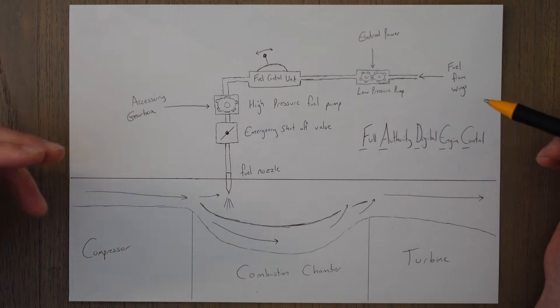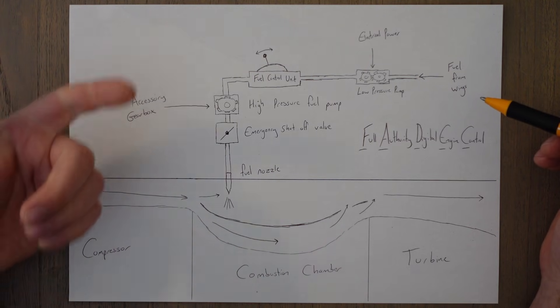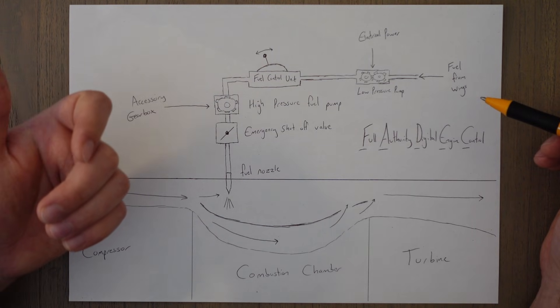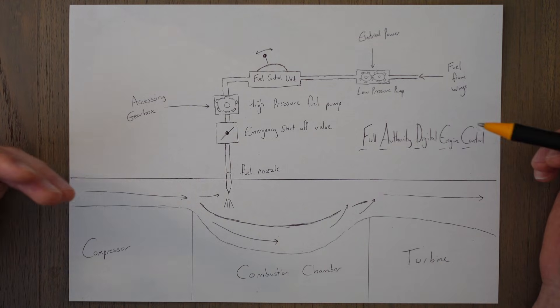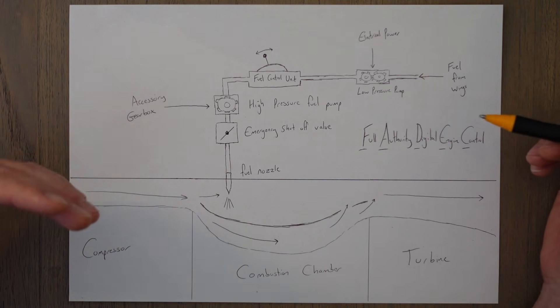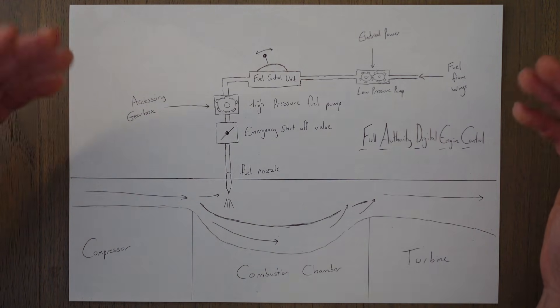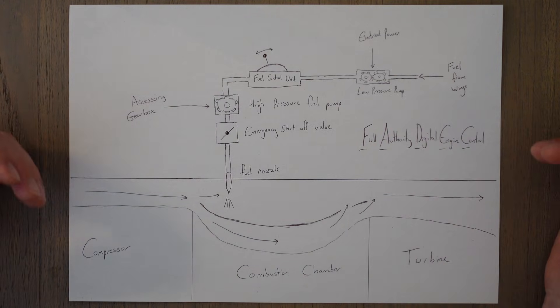FADEC normally has two channel redundancy with one channel active and one in standby. If one channel fails, then the other takes over automatically. And each engine will have its own FADEC system with an independent power supply so that it even works when the main power source fails for some reason.